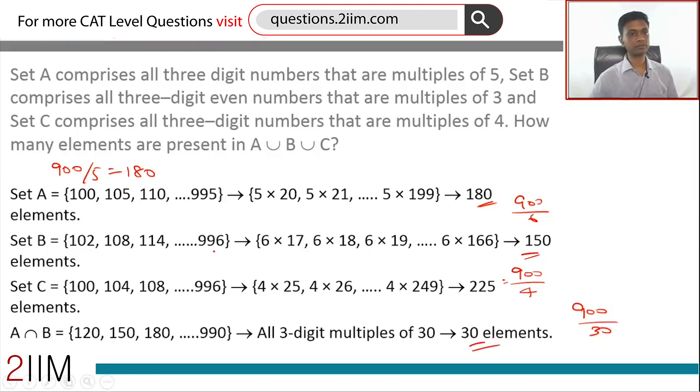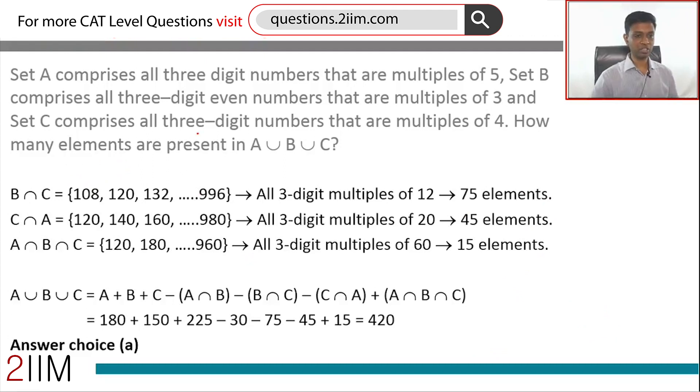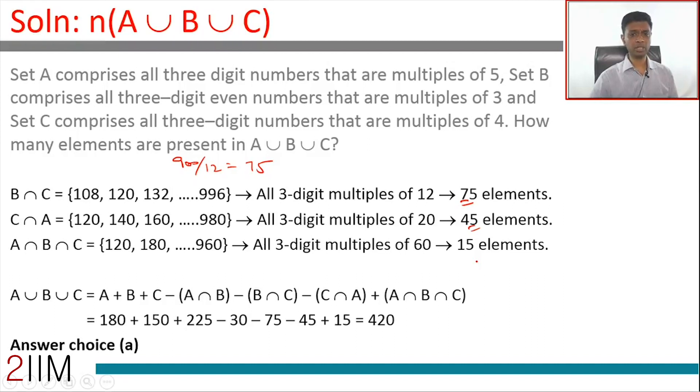Next number we want to do: B intersection C. Multiples of 6 and multiples of 4—multiples of 12. 900 by 12 is 75. C intersection A: multiples of 4 and 5—multiples of 20. 900 by 20 is 45. A intersection B intersection C: multiples of 6, 4, and 5.